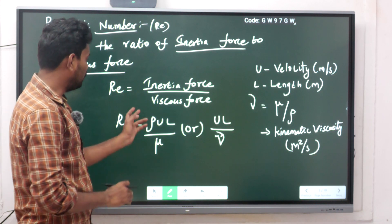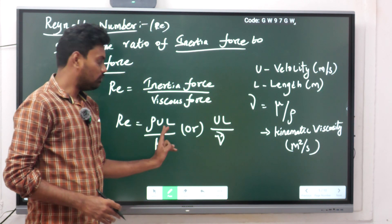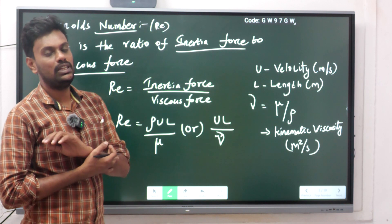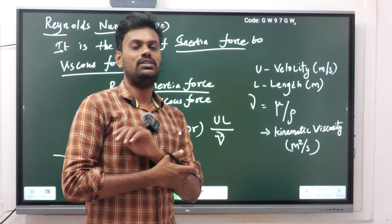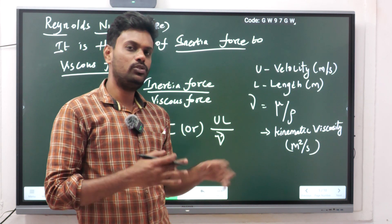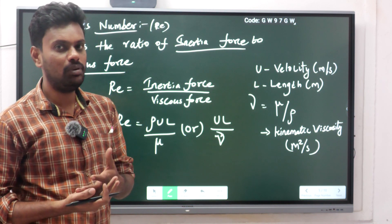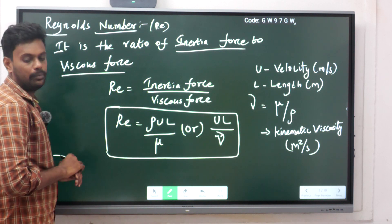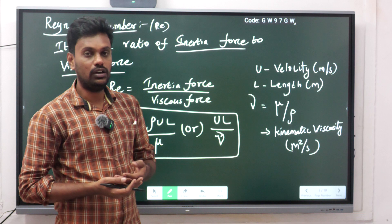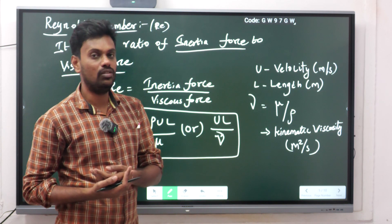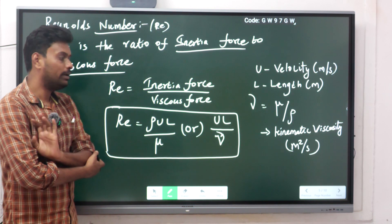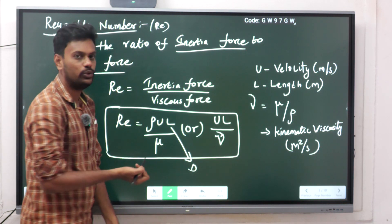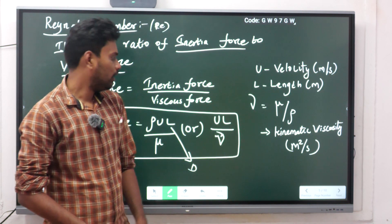The formula for Reynolds number is Re = ρ·u·l / μ, where ρ is the density, u is the velocity, and l is the length over which the fluid is flowing, and μ is the dynamic viscosity. This formula applies for flow over a flat plate. For a cylinder or pipe, instead of l we use d (diameter), giving Re = ρ·u·d / μ, or equivalently u·d / ν.